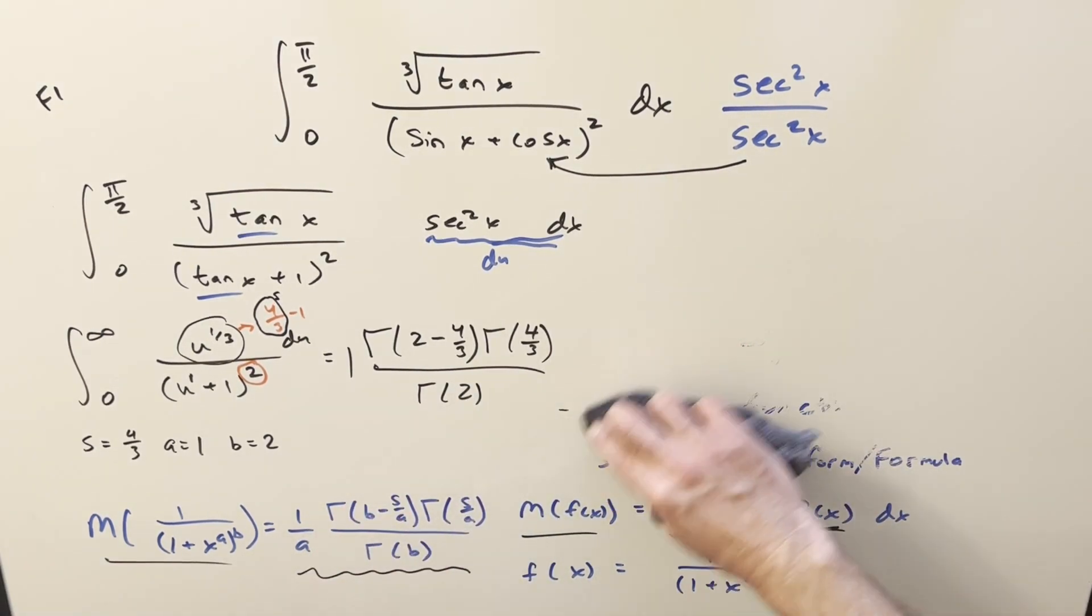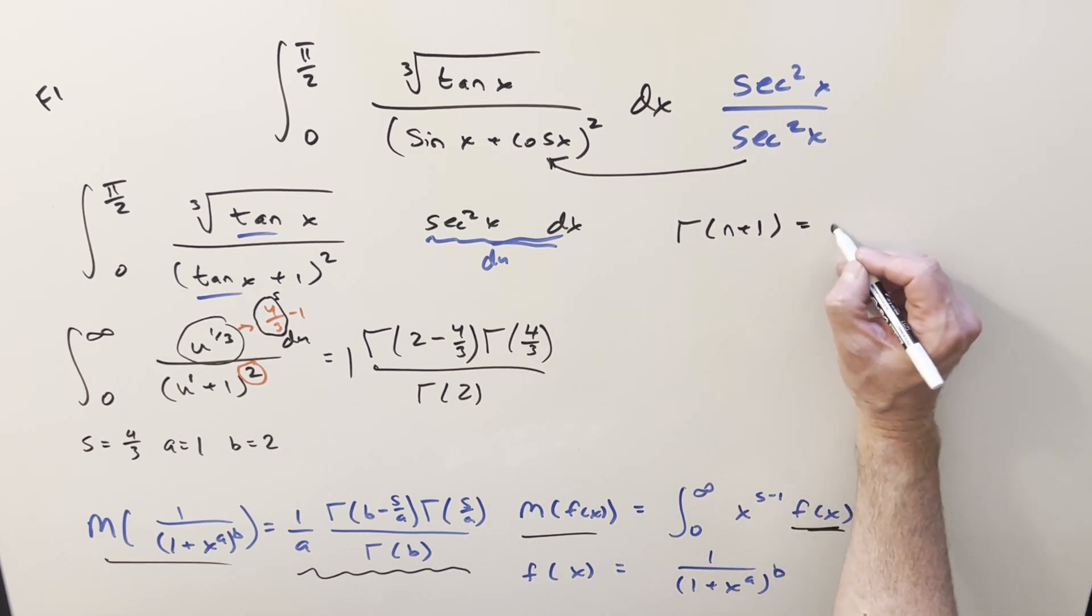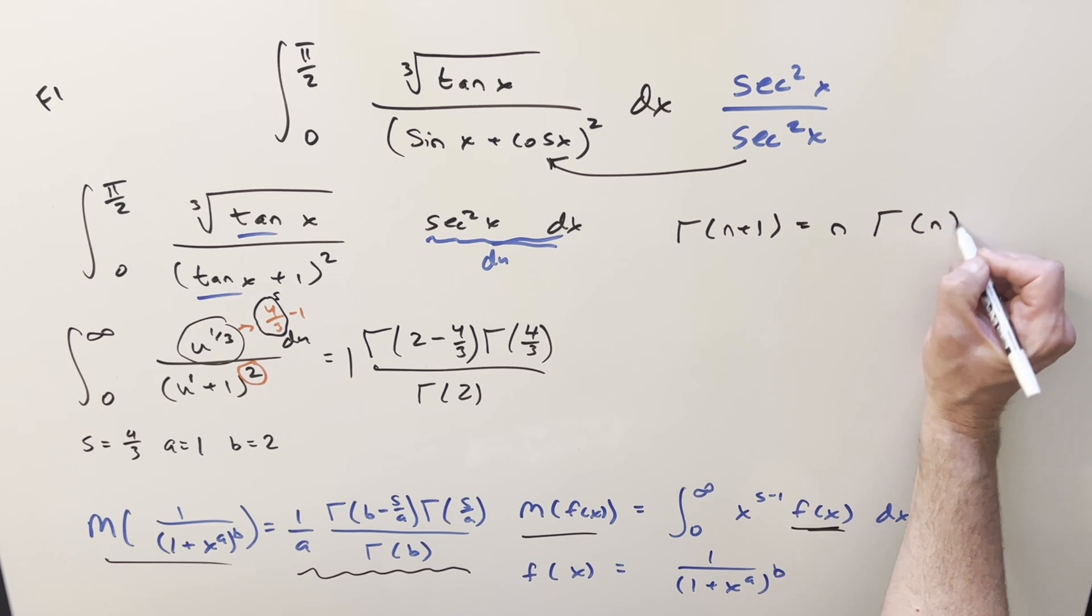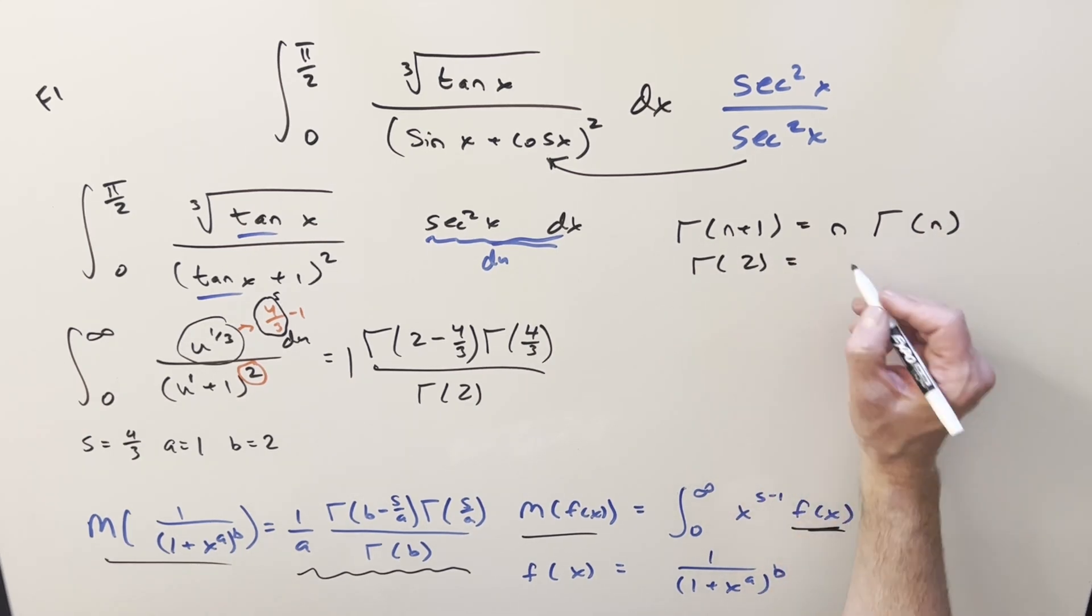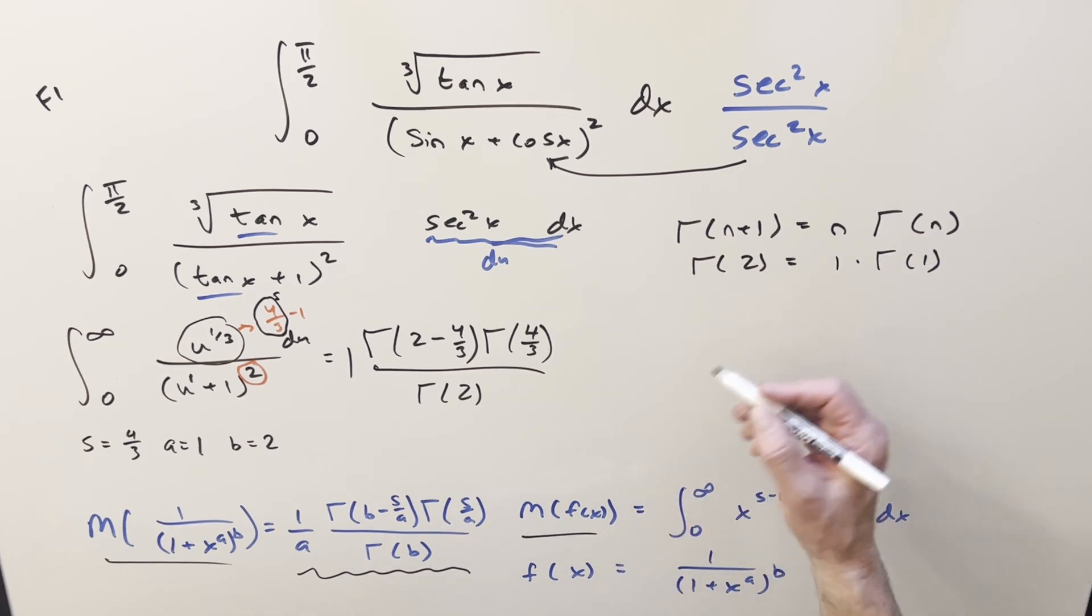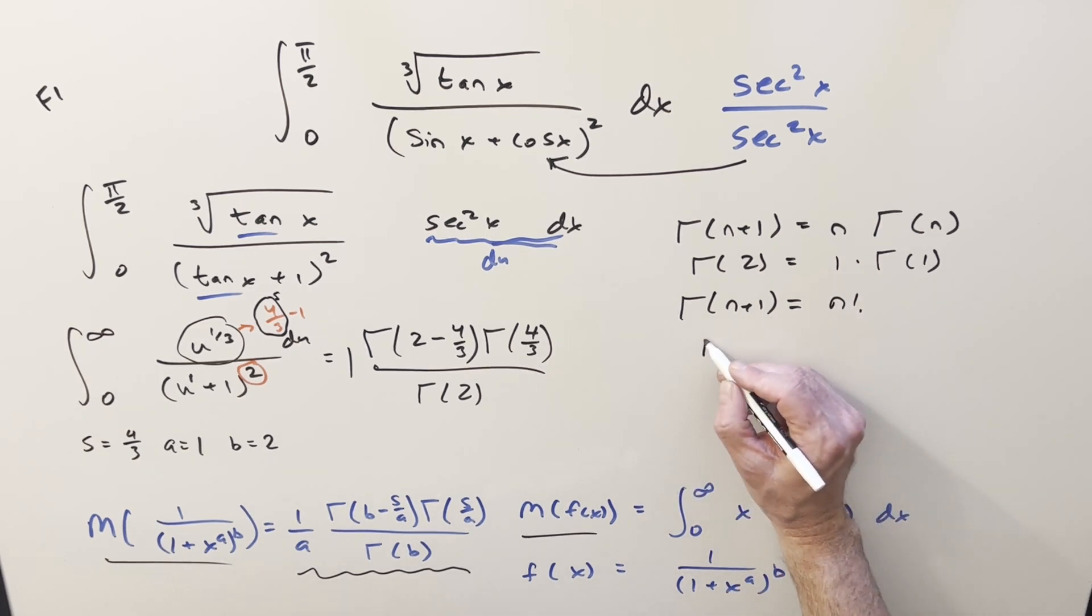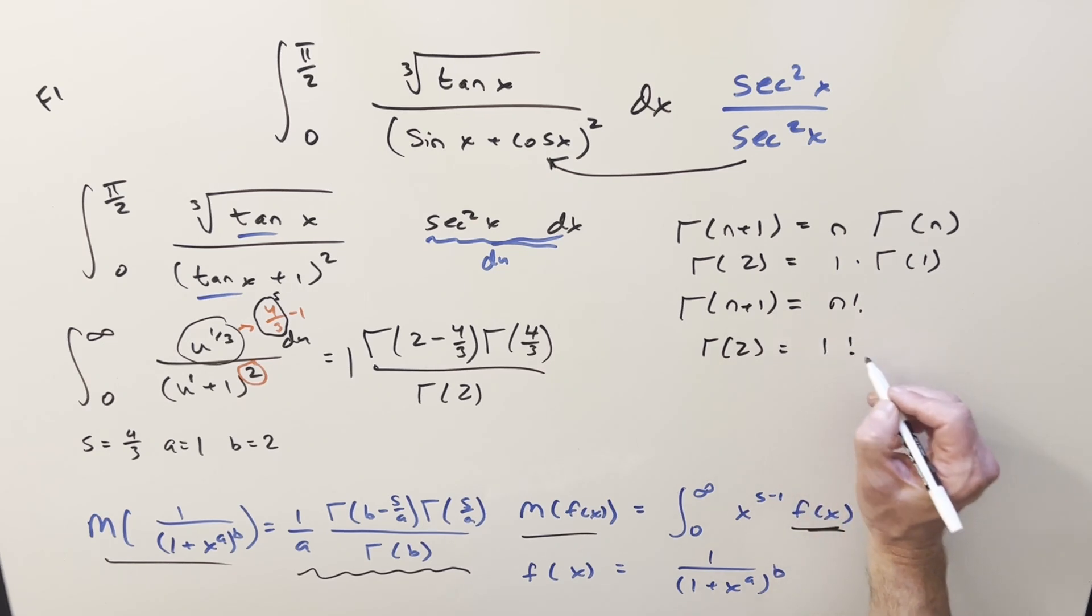But now for gamma of two, that's easy. We've got a reduction formula for the gamma function. The gamma function is just an extension of the factorial for non-integer values. So for gamma of n plus one, we can say that this is the same thing as n times gamma of n. So for gamma of two, this is just going to be, just reducing by one, this is going to be one times gamma of one. And actually, this is kind of a silly way to do it, because really what we could do is just look at the factorial definition. For gamma of n plus one, this is going to be the same thing as n factorial. So for gamma of two, this is just one factorial or one. Since that's one, let's just cross that off.